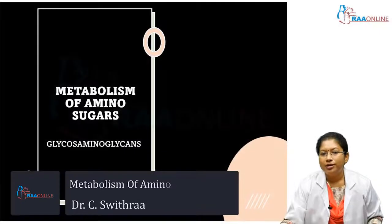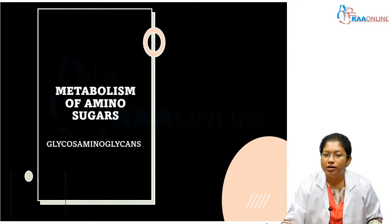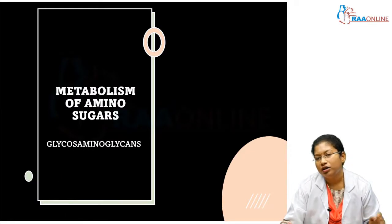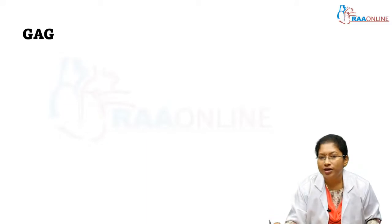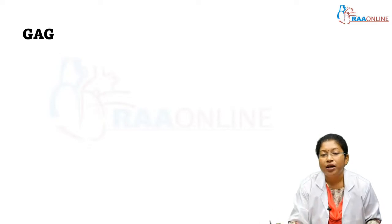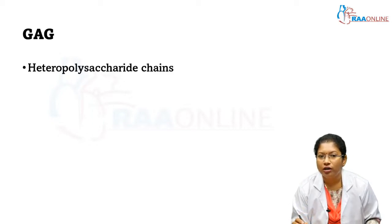Hello everyone. This session is about metabolism of amino sugars, that is glycosaminoglycans. Glycosaminoglycans are otherwise called mucopolysaccharides. Mucopolysaccharides are heteropolysaccharides — they do not contain the same unit of monosaccharides; they contain different repeating monosaccharides. So glycosaminoglycan is a heteropolysaccharide chain.